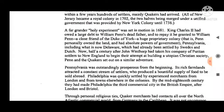A far grander holy experiment was set in motion in 1681. King Charles II had owed a large debt to William Penn's dead father, and to repay it he granted to William Penn — a close friend of the Duke of York — a huge proprietary colony. Penn personally owned that land and had absolute powers of government.